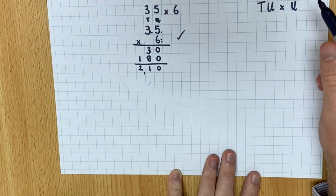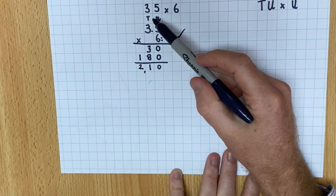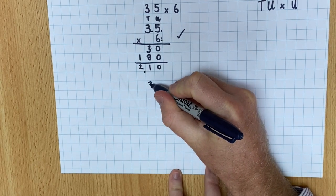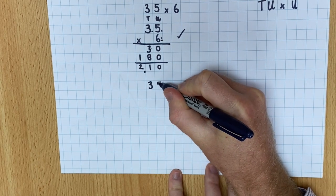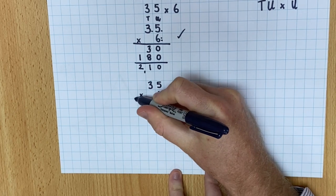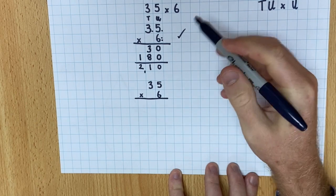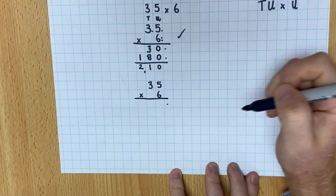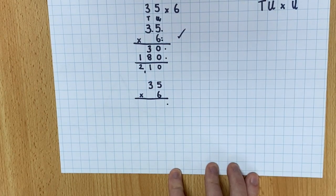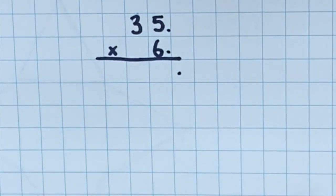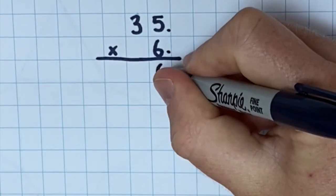The more difficult way and the quicker way to multiply 35 and 6 is like this. So I set it up exactly the same. 35 multiplied by 6. This time, instead of having 1, 2 lines of answers, I'm going to have just 1 line. So watch what I'm going to do. 6 multiplied by 5 is 30.